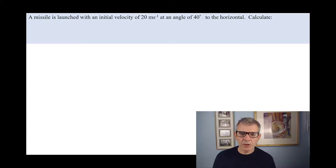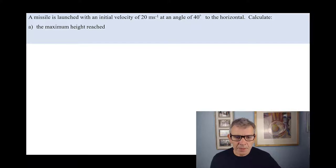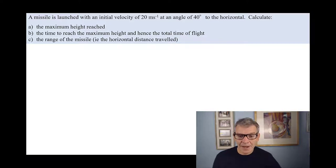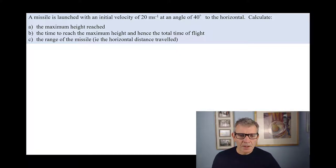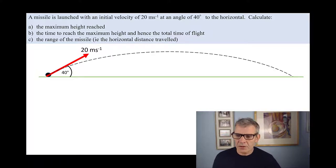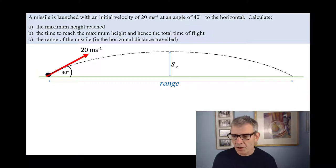We've got a missile that's launched with an initial velocity of 20 meters per second at an angle of 40 degrees to the horizontal. You have to calculate the maximum height reached, the time to reach the maximum height, and hence the total time of flight, and the range of the missile — the total horizontal distance traveled. Classic question, comes up very commonly. Drawing the diagram: there's our missile, launched at 20 meters per second at 40 degrees, with its path shown. There is the maximum vertical displacement — the maximum height — and there is the range, which is the horizontal distance.